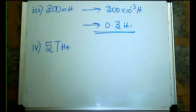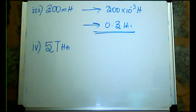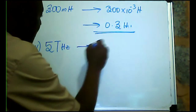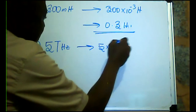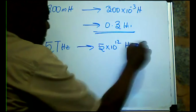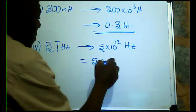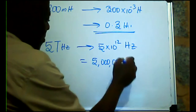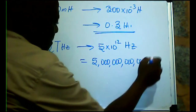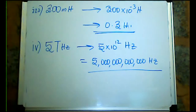Question four: convert 5 terahertz. Kilo is 10 to the power 3, mega is 10 to the power 6, giga is 10 to the power 9, and tera is 10 to the power 12. So 5 terahertz is 5 times 10 to the power 12 hertz.